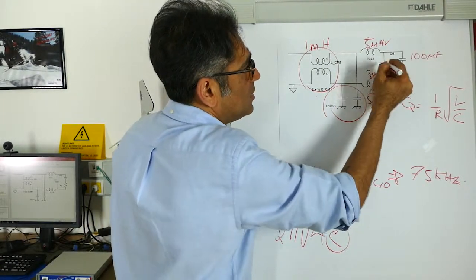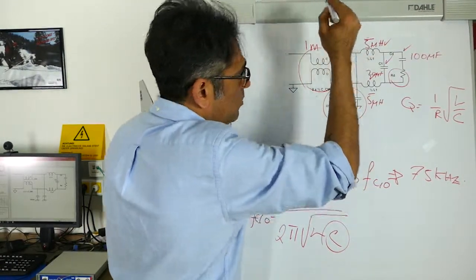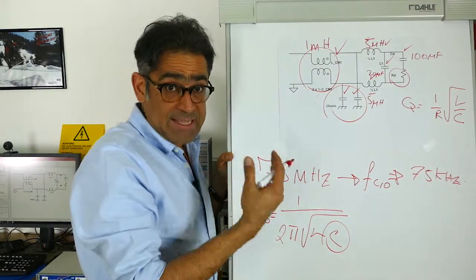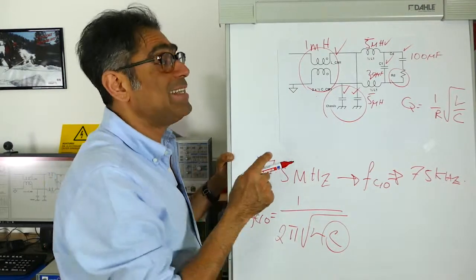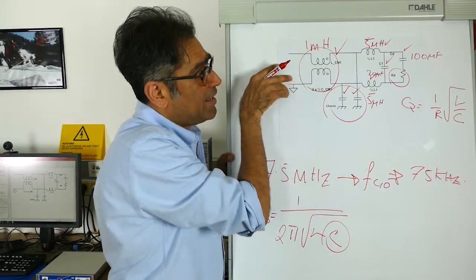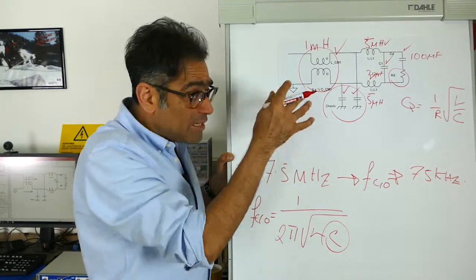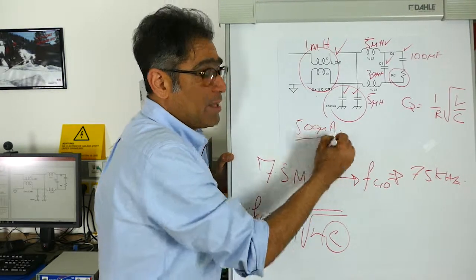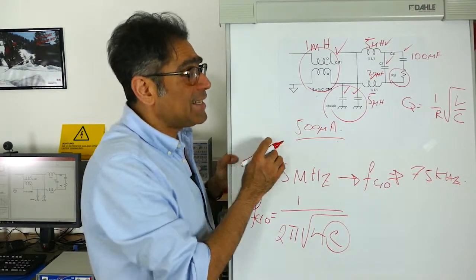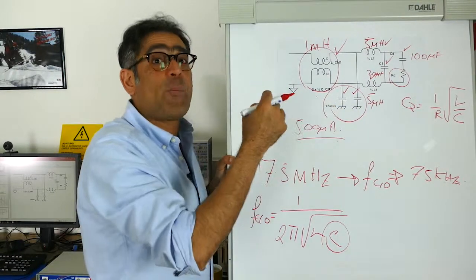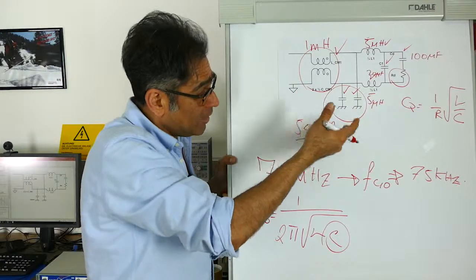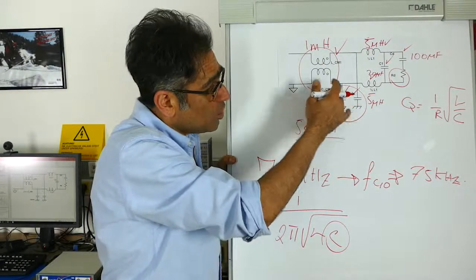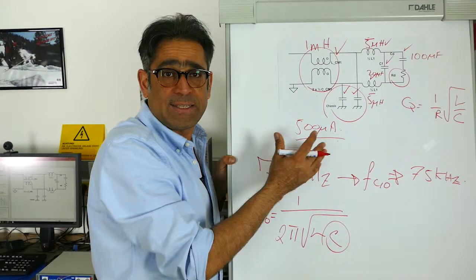So I have now calculated all of these component values and my design is complete. In the case of AC line filters there is an extra requirement because the leakage from your line and neutral down to chassis is limited — it could be, depending on the standard, 500 microamps. In that case you calculate the size of the capacitors based on how much current will flow through them, and you cannot exceed that value. That gives you the second way of calculating and ensuring these values do not violate any of the criteria.